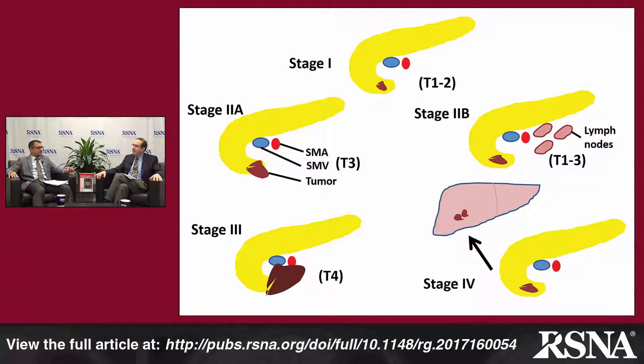Could you briefly review the staging of pancreatic ductal adenocarcinoma — in particular the characterization of what is considered resectable, borderline resectable, locally advanced, and metastatic disease? The staging system of the American Joint Committee on Cancer is the most widely used, divided into four stages. Stage 1 is when the tumor is less than 2 centimeters; Stage 2 is any size but does not involve adjacent vessels — these are clearly resectable tumors. Stage 4 is the other extreme, where there is metastatic disease and patients derive no benefit from resection.